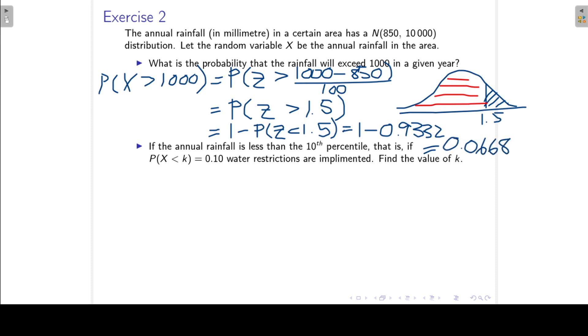The next question, if the annual rainfall is less than the tenth percentile, that is, if the probability X is less than k is 0.1, water restrictions are implemented. And we would like to find the value of k. So I start again by standardizing. And I standardize by subtracting the mean and dividing by the standard deviation.